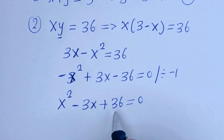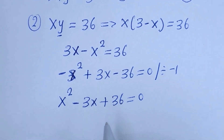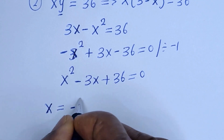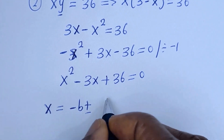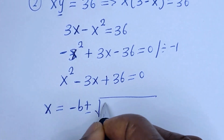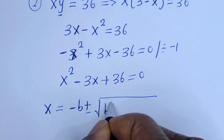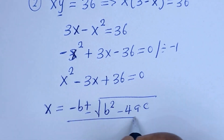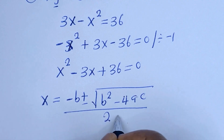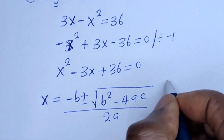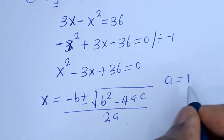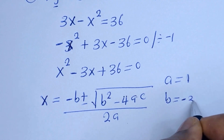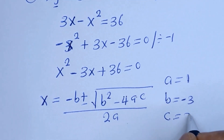So this is a quadratic equation. Let us solve this using the quadratic general formula: S is equal to negative B plus or minus the square root of B squared minus 4AC, all over 2A. From this equation, A is equal to 1, B is equal to negative 3, and C is equal to 36.